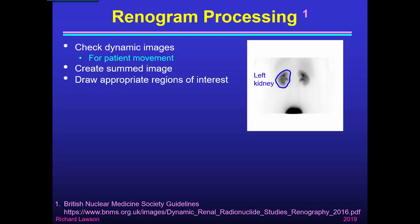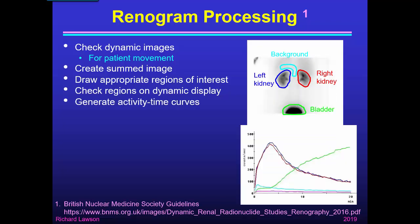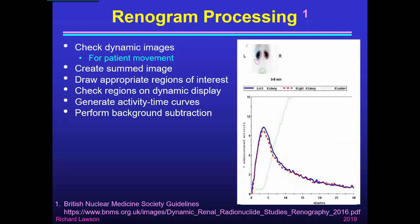We draw a region of interest around the left kidney in blue, around the right kidney in red, some background regions in a suitable place — and later in this talk I will discuss the different choices of background regions — and also around the bladder. We then check these regions on a dynamic display to ensure they encompass the correct kidney areas, that the kidneys stay within the kidney regions, the patient doesn't move, and the bladder stays within the bladder region. We then use those regions to generate activity-time curves and perform background subtraction from the kidney and bladder curves.